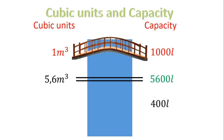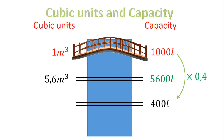If I have four hundred liters, I have to ask: how do I go from one thousand liters to four hundred? I times by zero comma four. So under cubic units, I take one meter cubed, times by zero comma four, and that means it's zero comma four meters cubed. In other words, four hundred liters is zero comma four meters cubed.